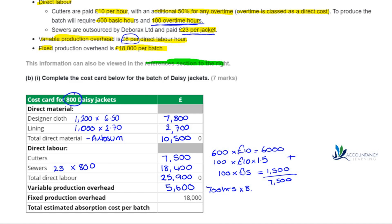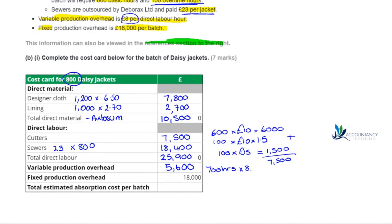The fixed production overhead of £18,000 is already given. We then need to put in the total estimated absorption cost per batch by adding total direct materials, total direct labour, variable production overhead, and fixed production overhead, which comes to a total of £60,000.